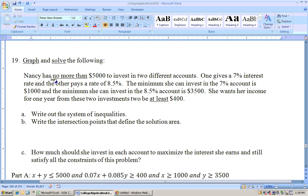Okay, on problem number 19, it says graph and solve the following. Nancy has no more than $5,000 to invest in two different accounts. So we'll say x + y ≤ 5000. One gives 7% interest, and the other one is an 8.5% interest rate. And the minimum she can invest in the 7% account is $1,000, so x ≥ 1000. We're going to call x the amount that she invests in the 7% account. And the minimum she can invest in the 8.5% account is $3,500, so y ≥ 3500.